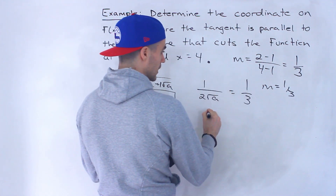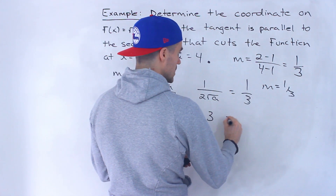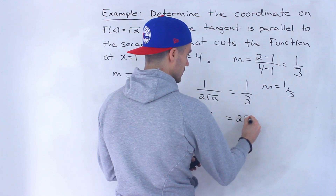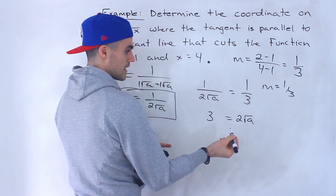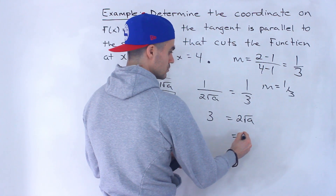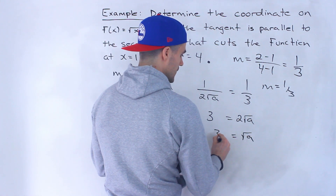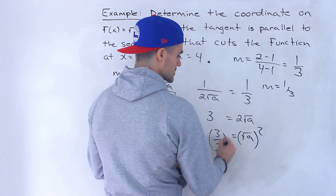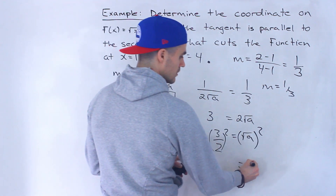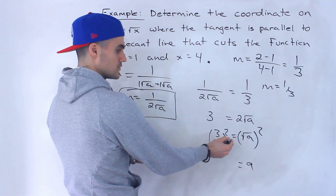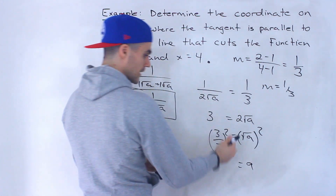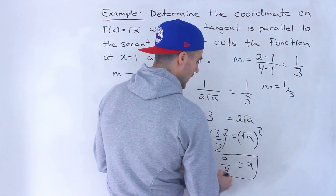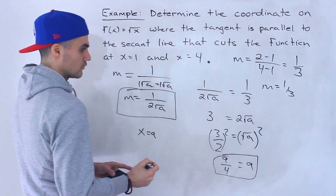So we set 1/(2√a) = 1/3 and solve. Cross multiply: 3 × 1 = 3 and 1 × 2√a = 2√a. Divide both sides by 2, giving √a = 3/2. Then square both sides to get rid of the square root: a = (3/2)² = 9/4. So a = 9/4.